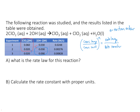For chlorine dioxide, my highest concentration is 0.06 and my lowest is 0.03, raised to the power of n, equals my largest rate 0.0248 divided by 0.00276. When I divide, I get 3 raised to the power of n equals 9. This has to be a second-order relationship with respect to chlorine dioxide, because I tripled the concentration and my rate went up by a factor of 9.